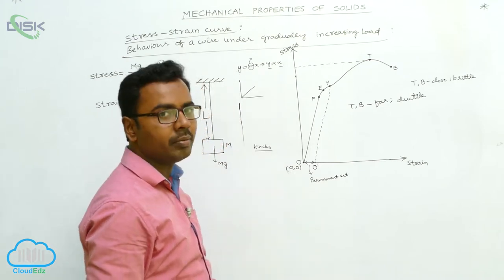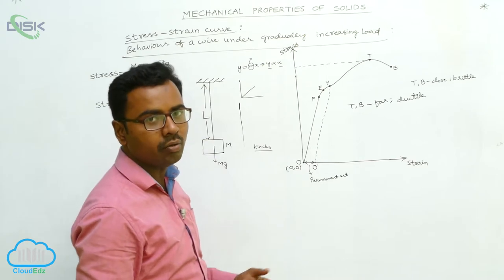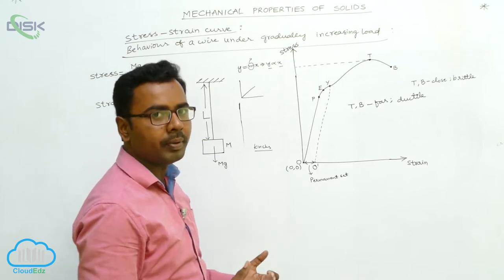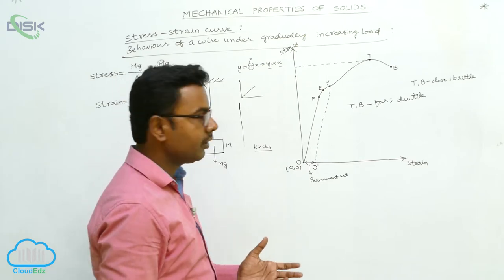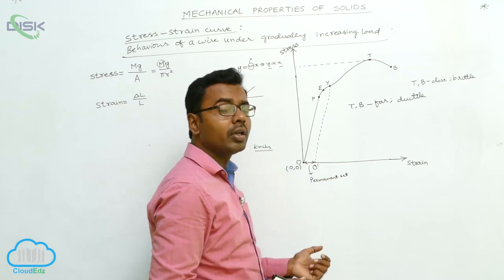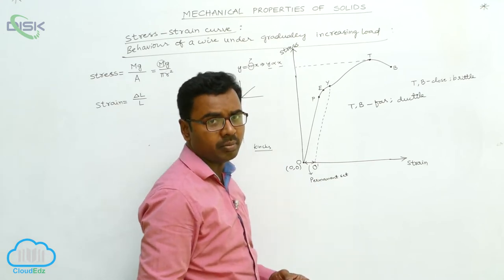Examples of ductile materials are gold and silver. Since we use gold to prepare ornaments, gold is the best example of a ductile material.